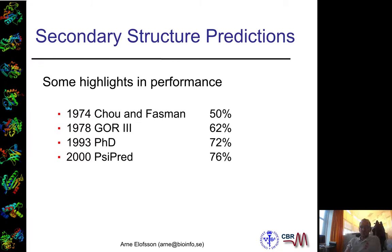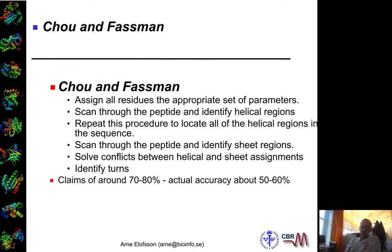So just a short tell about what Chou-Fasman was, the first method. Actually, it looks at the properties of each amino acid, and then it scans through a sequence and assigns helical and sheet regions to these sequences.